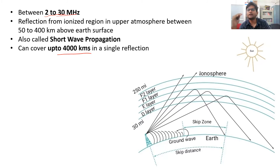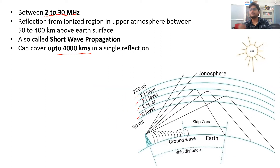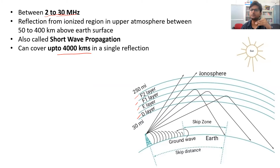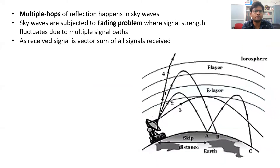There are many layers in the ionosphere: the D layer, E layer, F1 and F2 layer. These layers are divided based on their height from the surface of the earth and the concentration of charges or electrons in these layers.